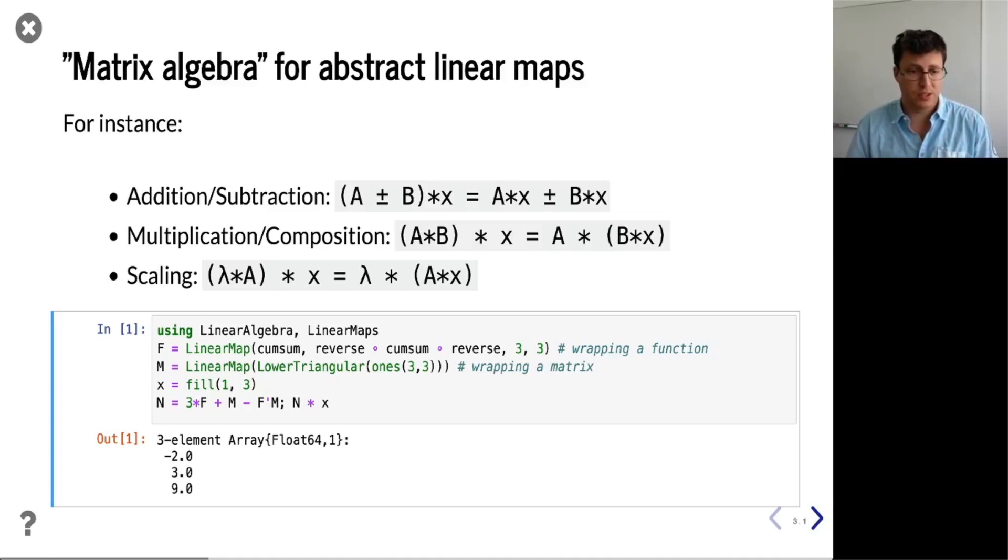And then with these two types, we define a new linear map that includes all those operations from the top, and then we compute the action of this linear map N on x simply by N star x.